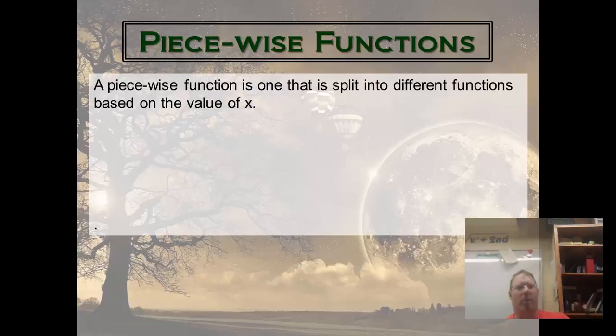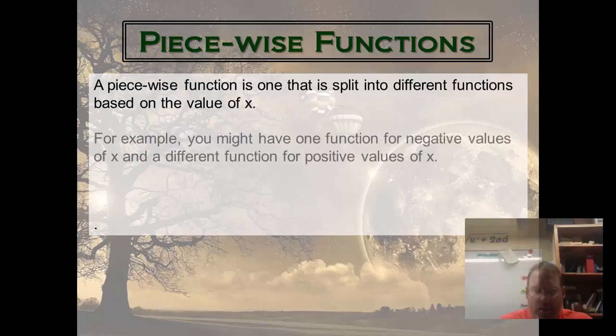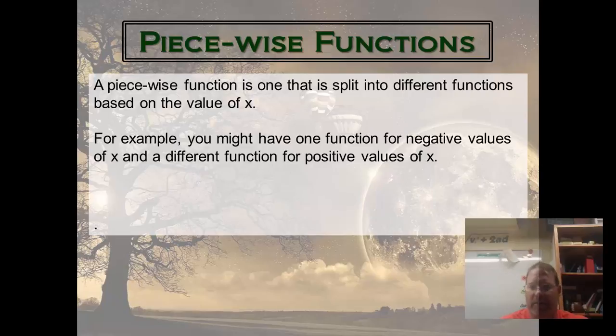All right, so a piecewise function is one that is split into two different, or even more, maybe three different functions, depending on what the value of x is. For example, you might have one function for negative values of x, but a second different function for positive values of x. And the way they show it is like this.